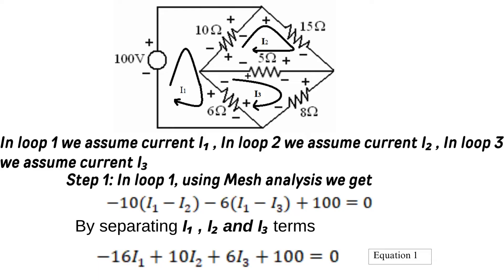Step 1 — In loop 1, using mesh analysis: the current through the 10 ohm resistor is (I1 − I2) since I1 and I2 are in opposite directions. For the 6 ohm resistor, I1 is opposite to I3. The equation is: −10(I1 − I2) − 6(I1 − I3) + 100 = 0, which simplifies to −16·I1 + 10·I2 + 6·I3 + 100 = 0. This is Equation 1.